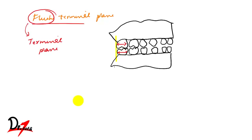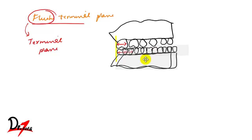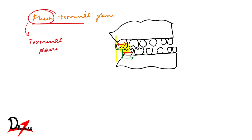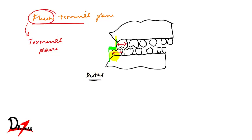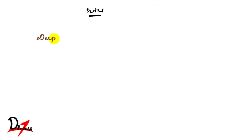We also have the mesial step and the distal step. In the mesial step, the lower deciduous second molar is ahead — that is, mesial to the upper. In the distal step, the distal surface of the lower deciduous second molar is distal to that of the upper. If it is mesial, it is a mesial step.